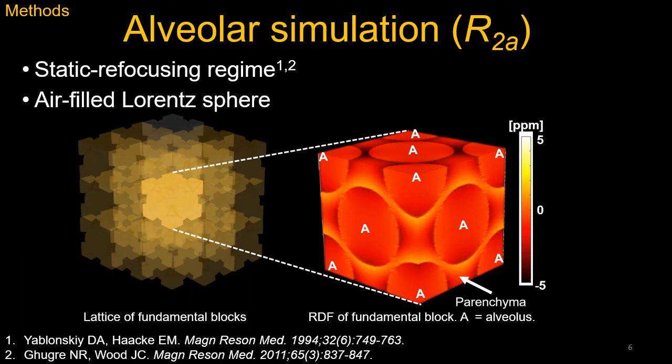The alveoli are modeled by multiple Lorentz spheres with air on the inside and parenchyma on the outside. Parenchyma spins are assumed to be in the static dephasing regime, which neglects proton diffusion. On the left, a 3×3×3 lattice is shown, but a 9×9×9 was used for simulation. On the right, this is the relative difference field of a fundamental block,